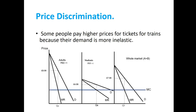Looking at the graph, we see the demand curves for adults and students. Adults have more inelastic demand, represented by the steeper curve, meaning they are less responsive to price changes. As a result, the price for adults is higher at €8.99. Students, on the other hand, have more elastic demand, shown by the flatter demand curve, meaning they are more sensitive to price changes, so the price for students is lower at €4.99. This strategy is known as price discrimination — charging different groups different prices for the same goods or services based on their price sensitivity.